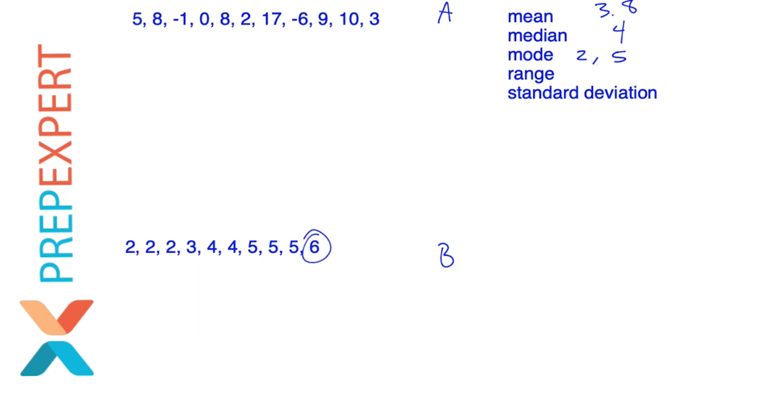Now let's find the range. Again, just the highest number minus the lowest number. That's six minus two. In this case, four.